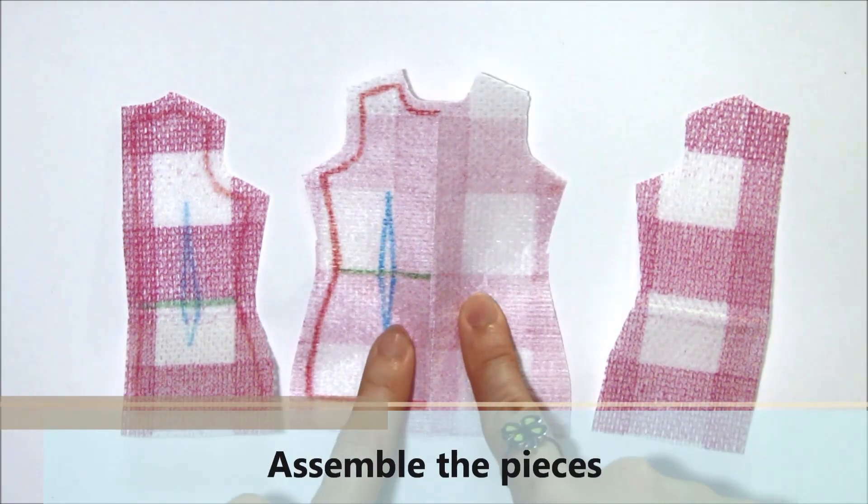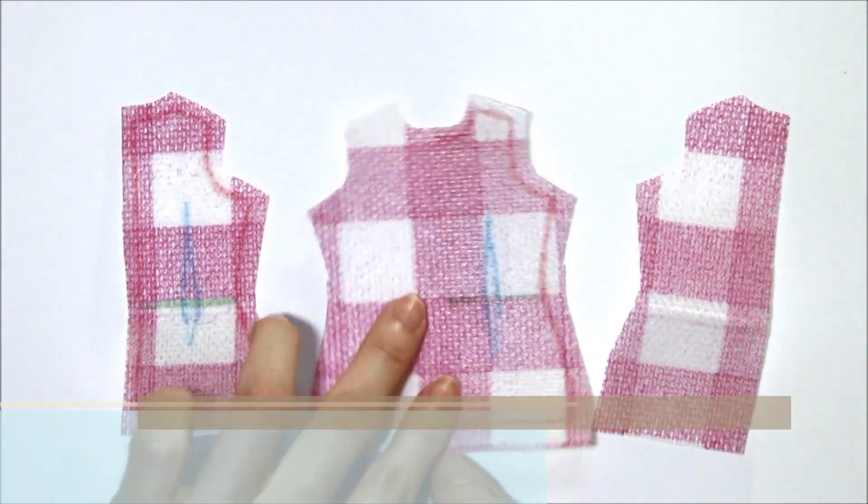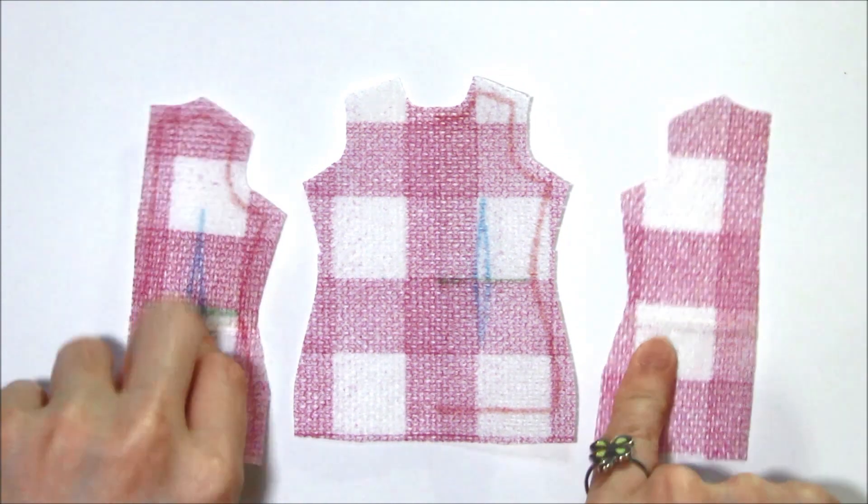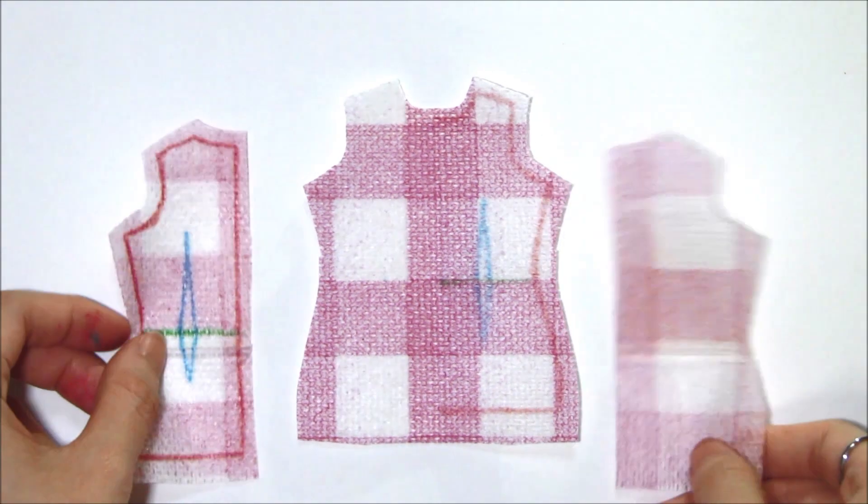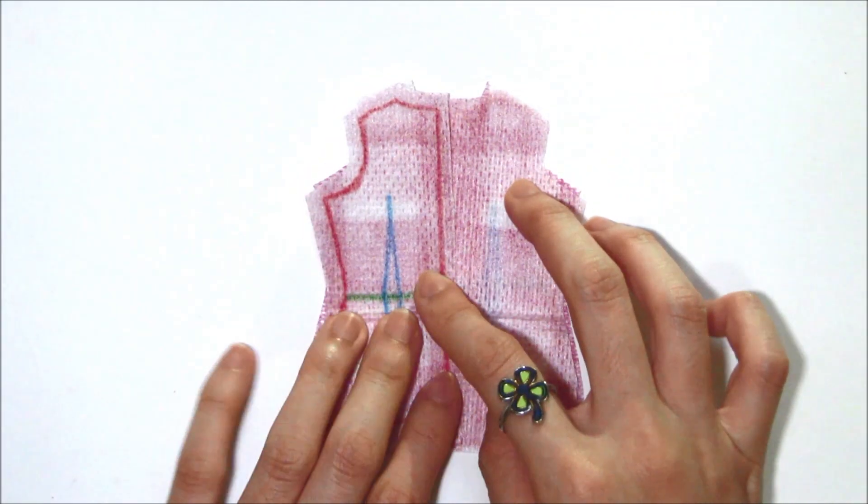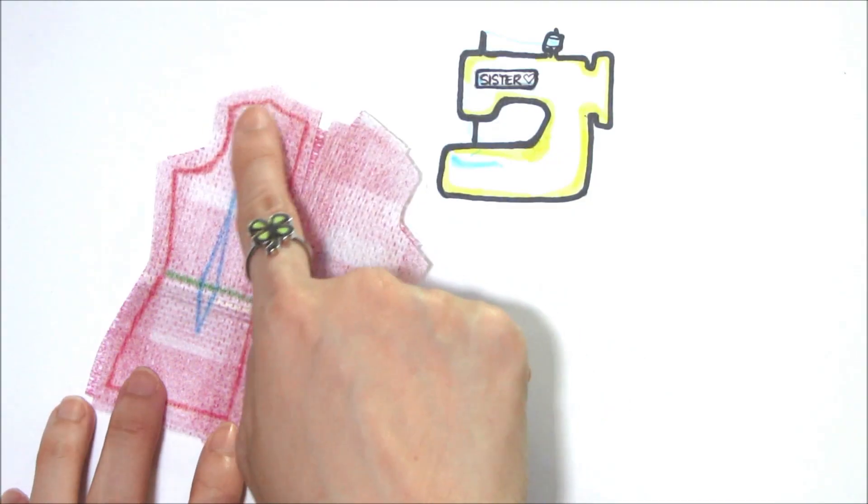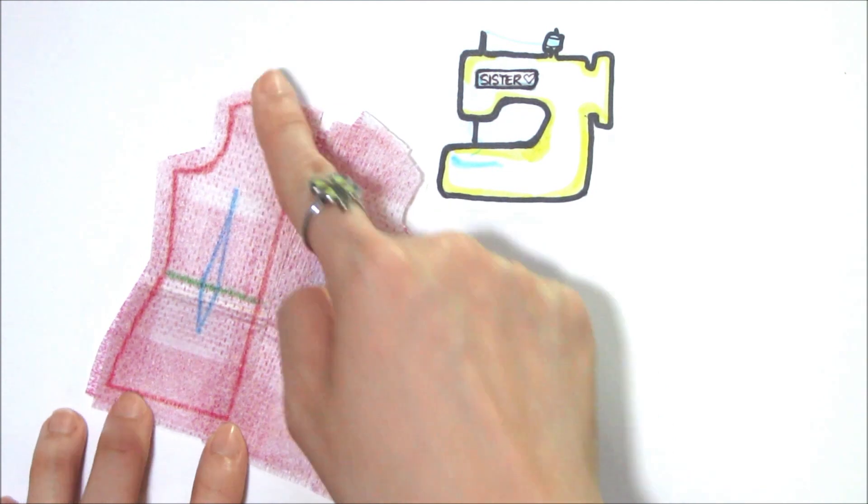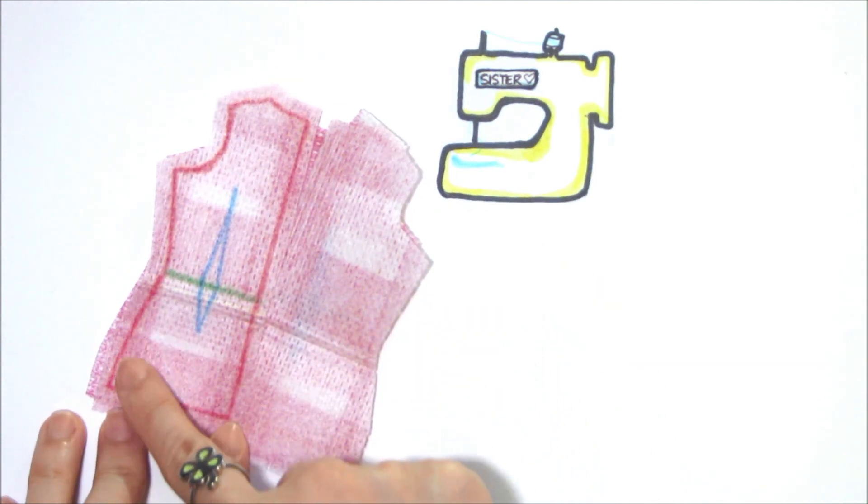Assemble them together. Flip the front piece of the fabric over, good side facing you. Flip the two back pieces over, good side facing you. And then we stack them together like this. And then sew them with our sewing machine. We'll start with the shoulders and then we sew the sides.